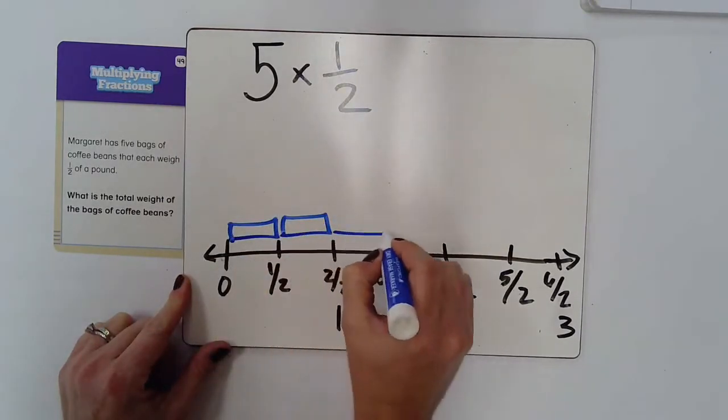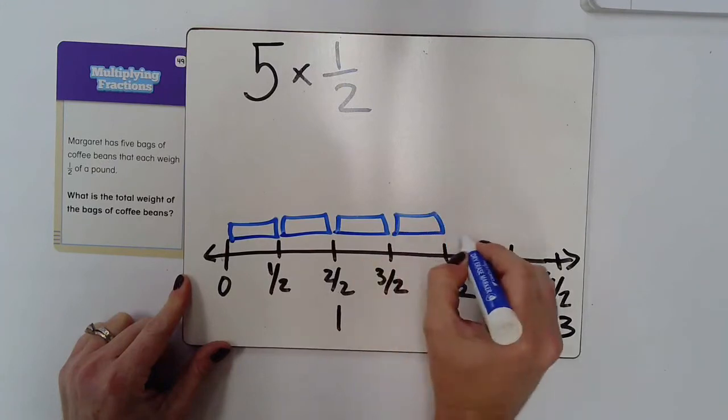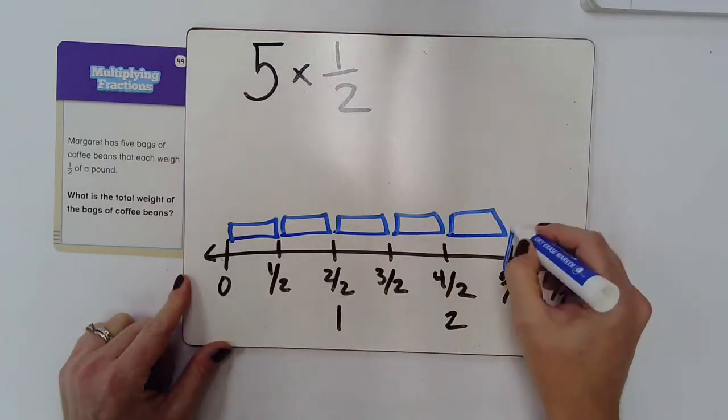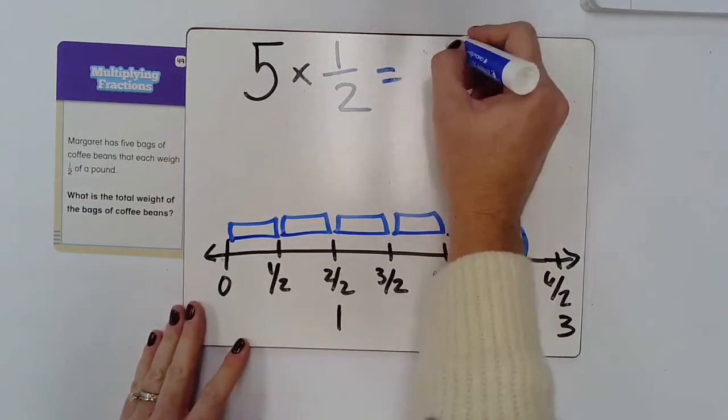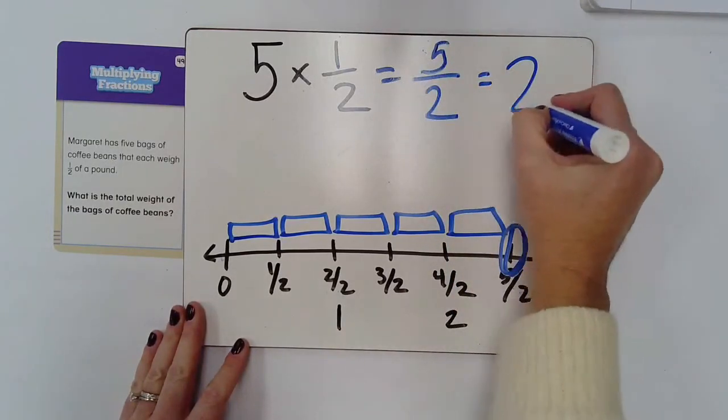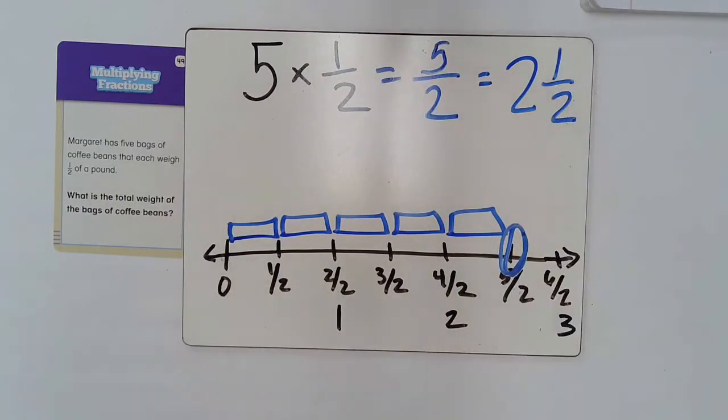I have one group here, one group here, three, four, and five groups, which is showing me that my total would be five-halves or two and one-half.